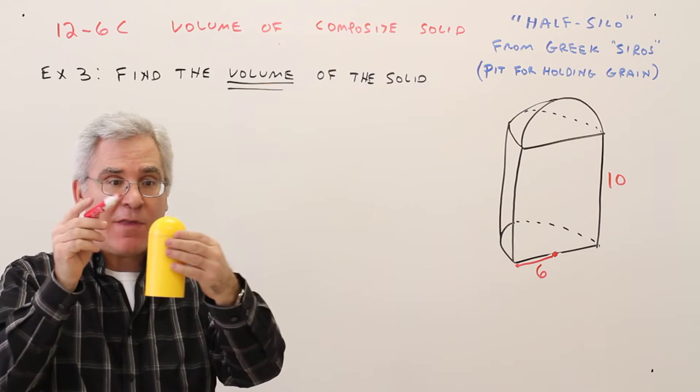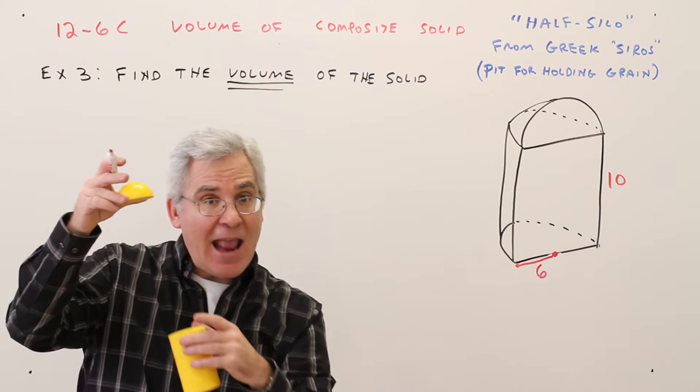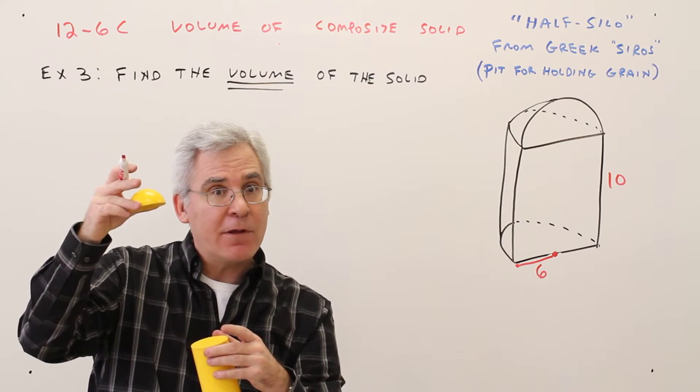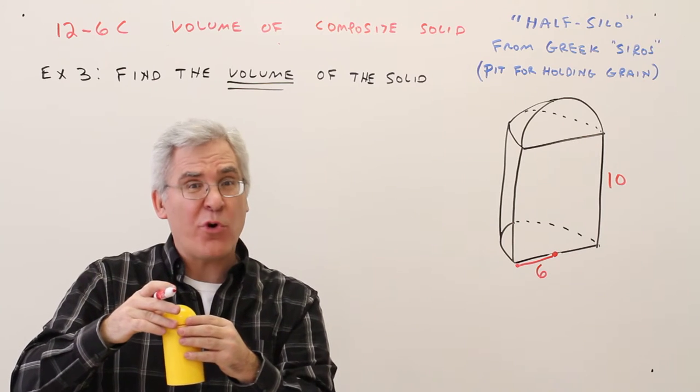Now when I chop the silo in half, I'm chopping the cylinder in half and the hemisphere in half. So instead of getting a half sphere, I'll end up with a quarter of a sphere.